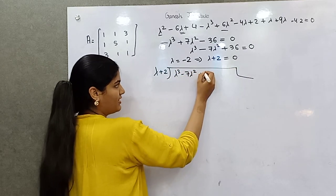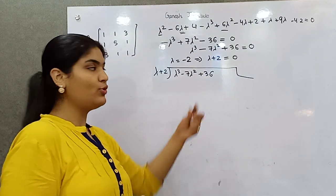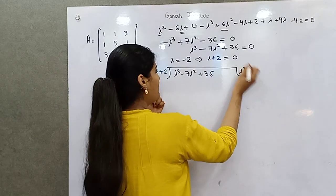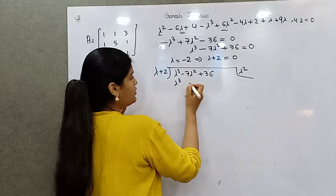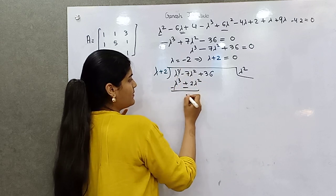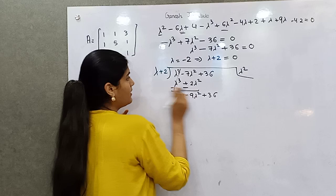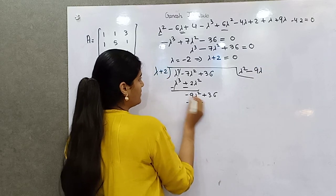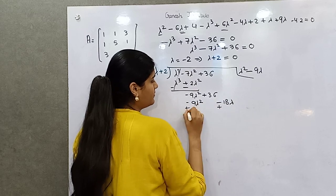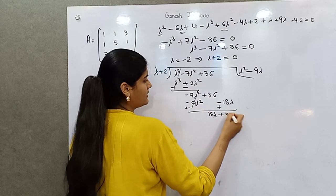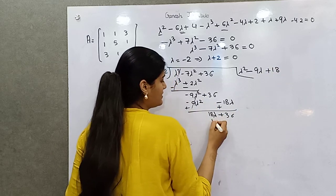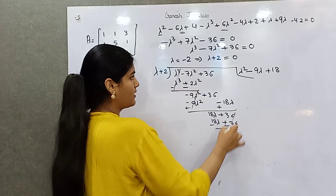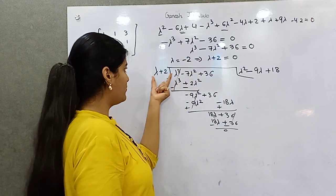For those who don't know how to solve a cubic polynomial, I'll walk through the long division. Lambda cubed divided by lambda squared gives lambda cubed. Then bring down: to make minus 9 lambda squared, subtract terms. We get minus 9 lambda squared, then 18 lambda, and 18 lambda plus 36.